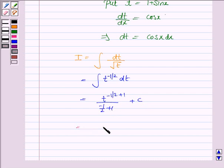which is equal to t to the power 1 by 2 upon 1 by 2 plus c which is equal to 2 into t to the power 1 by 2 plus c.